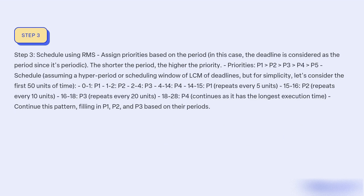Step 3: Schedule using RMS. Assign priorities based on the period — in this case, the deadline is considered as the period since the tasks are periodic. The shorter the period, the higher the priority. Priority order: P1, P2, P3, P4, P5. Schedule assuming a hyper-period or scheduling window of the LCM of deadlines, but for simplicity, consider the first 50 units of time.